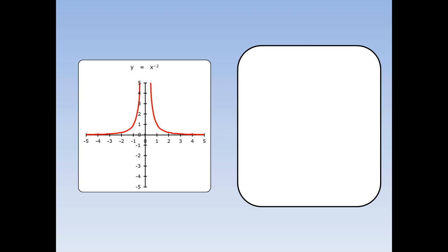As usual, if I want to find out the gradient at a specific point, for example x equals 1, on the graph of y equals x to the minus 2: write down the equation of the curve and differentiate it. The minus 2 drops down the front to multiply, and minus 2 take away 1 is minus 3. Now if I want to find out exactly what it is at x equals 1, I substitute in x equals 1. And the gradient dy by dx ends up being minus 2.